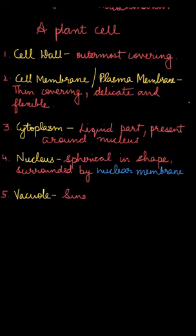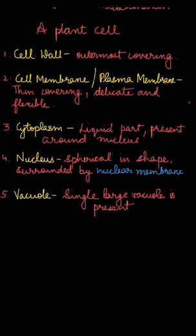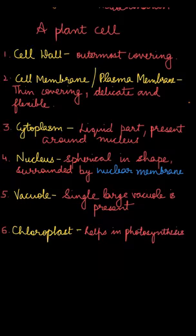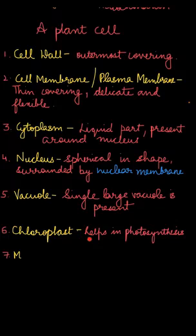The vacuole in a plant cell is single and large, and its function is to throw out waste from the cell. Next, we have chloroplast, which is only present in the plant cell and carries out the function of photosynthesis.